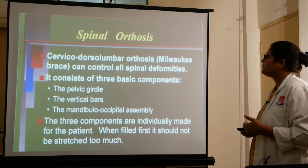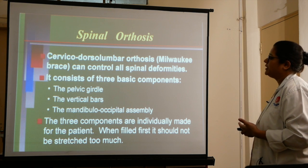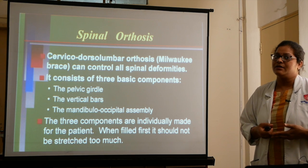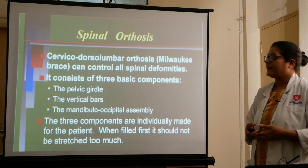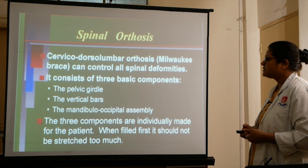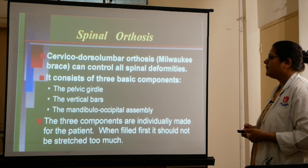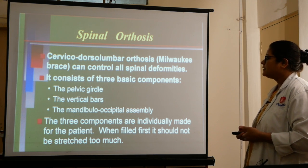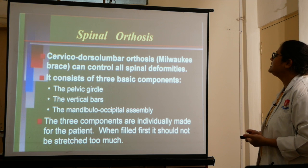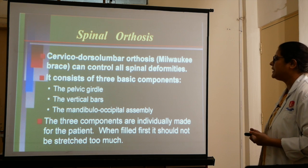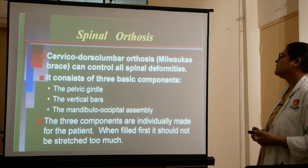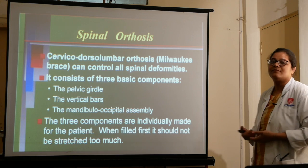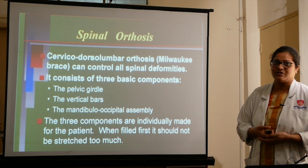The cervico-dorsal lumbar orthosis can control all spinal deformities. It consists of three basic components: first, the pelvic girdle; second, the vertical bars; and third, the mandibular-occipital assembly. These three components are individually made for the patient when fitted, and the brace should not be overly stretched.